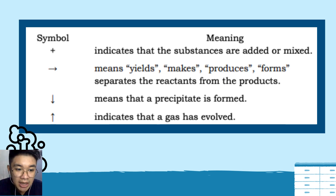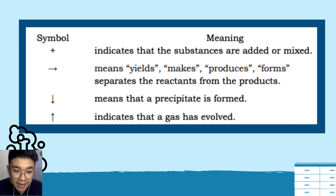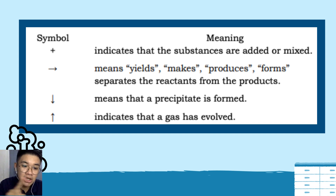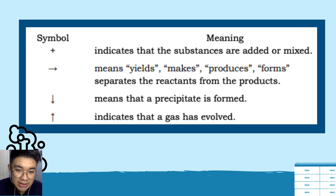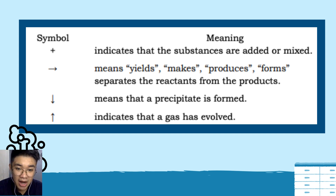Take note of these symbols and their meanings. The plus sign (+) indicates that substances are added or mixed together. The arrow pointing to the right means 'yields,' 'makes,' 'produces,' or 'forms' — it separates reactants from products.